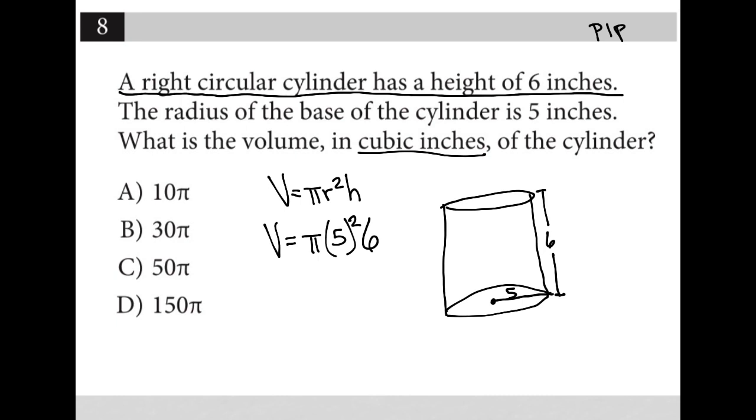All I need to do now is the math. So I'm going to start simplifying. So v equals pi. What is five squared? Five squared is 25. So this one is 25 times six. 25 times six is 150. So v equals 150 pi.